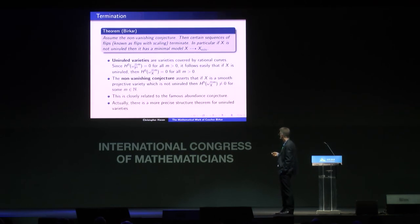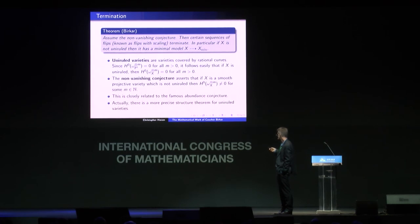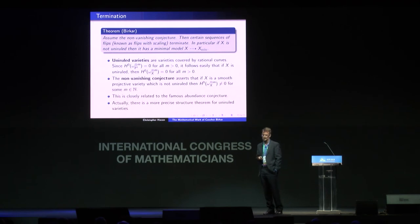Here is Birkar's result. He proves that if we assume the non-vanishing conjecture — which states that if you look at the canonical ring of a variety not covered by rational curves (not uniruled), then it has at least one non-trivial section — then certain sequences of flips known as flips with scalings terminate. So not any random sequence: you have to choose your sequence of flips carefully, but then the procedure works. In particular, if X is not uniruled, minimal models exist. The existence of minimal models is still conjectural in full generality, but there is very strong evidence.